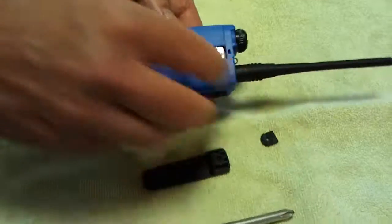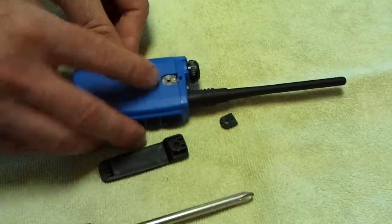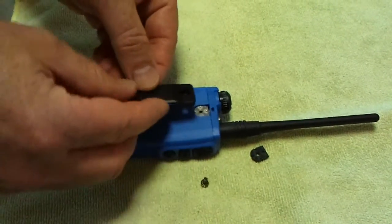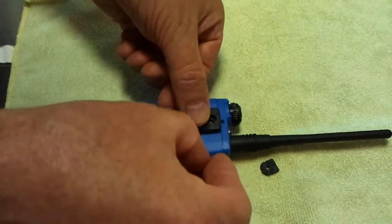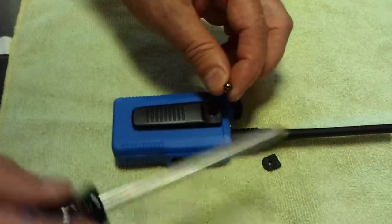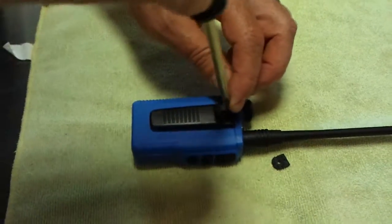Once that spacer is removed, you can now see you've got a nice solid feature in that die cast heat sink that will grab that belt clip and make it very strong and secure.